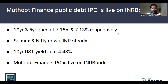The issue comprises seven series with monthly, annually, and cumulative options. The maturity ranges from 36 months to 60 months and the yield ranges from 8.75% to 9%. Minimum investment to participate in the issue is ₹10,000 with 10 NCDs, and ₹1,000 per NCD thereafter.